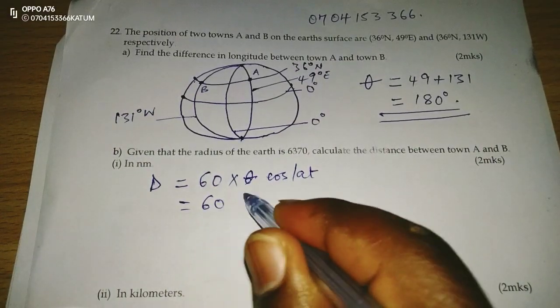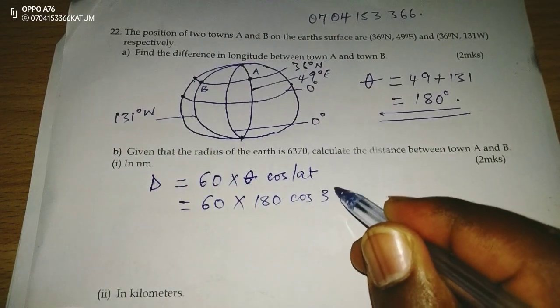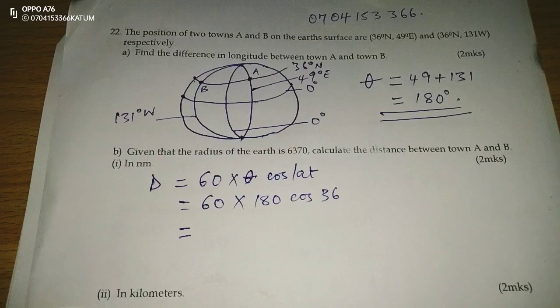This is going to be 60 times the angle difference of 180, cosine of 36 degrees. So when I multiply 60 by 180, cosine of 36,